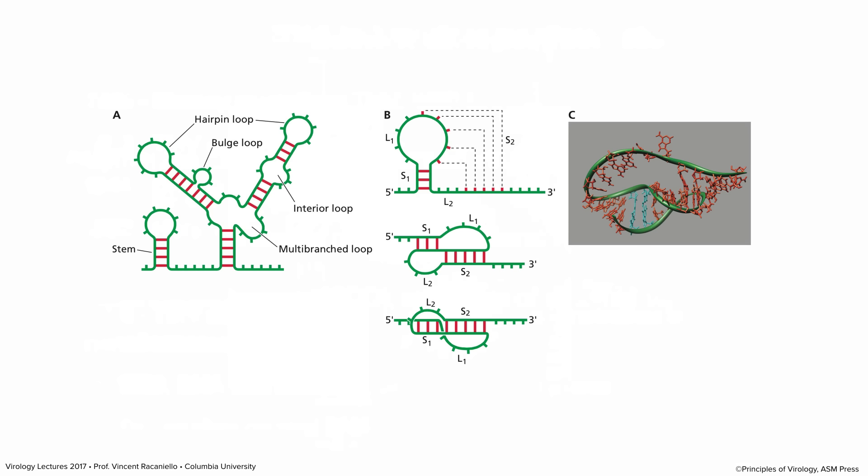One kind of loop we'll talk about is called a pseudoknot — it's not really a knot but it looks like one. What happens is you have a stem loop, and then some bases in the loop are complementary to downstream bases. They base pair and form two base-paired stems. The RNA looks like it's knotted around itself, but it's not — that's why it's called a pseudoknot. These have functions in viral genomes.